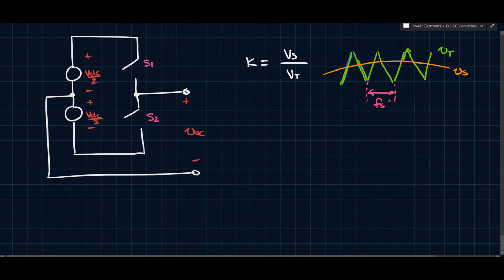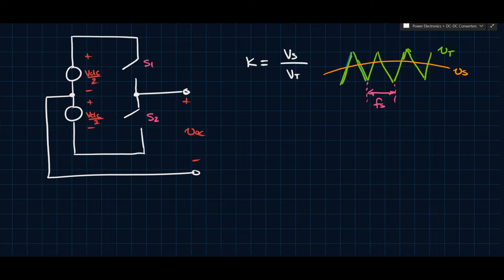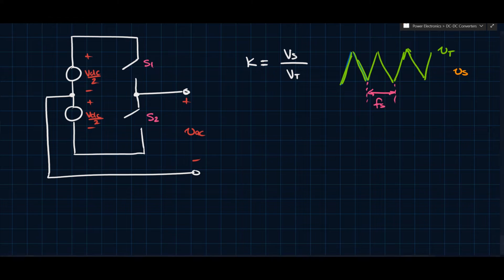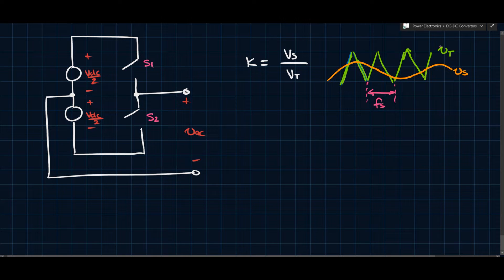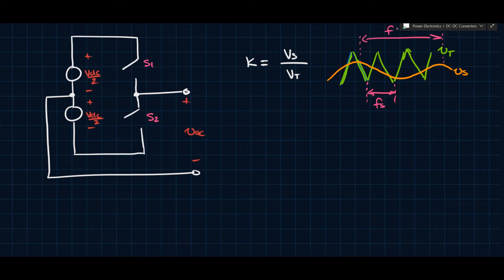It's important to distinguish between the carrier frequency and the fundamental frequency, because VS can have a frequency as well. If VS is a sine wave, then VS has its own frequency — let's call it F — and that would be the fundamental frequency of the signal. So the key point here is to distinguish between FS, the switching frequency, and F, the fundamental frequency.